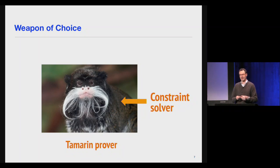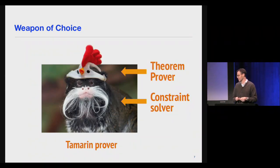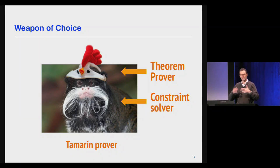The weapon of choice we have been working on is Tamarin. Tamarin is not an acronym — it's actually a monkey, a cute monkey. Tamarin is basically a constraint solver that solves constraints about what the adversary could do in a particular situation, and then we turn that constraint solver into a theorem prover. So it's a constraint solver disguised as a theorem prover. I'll say a little bit about what Tamarin does without going into the algorithmic background.